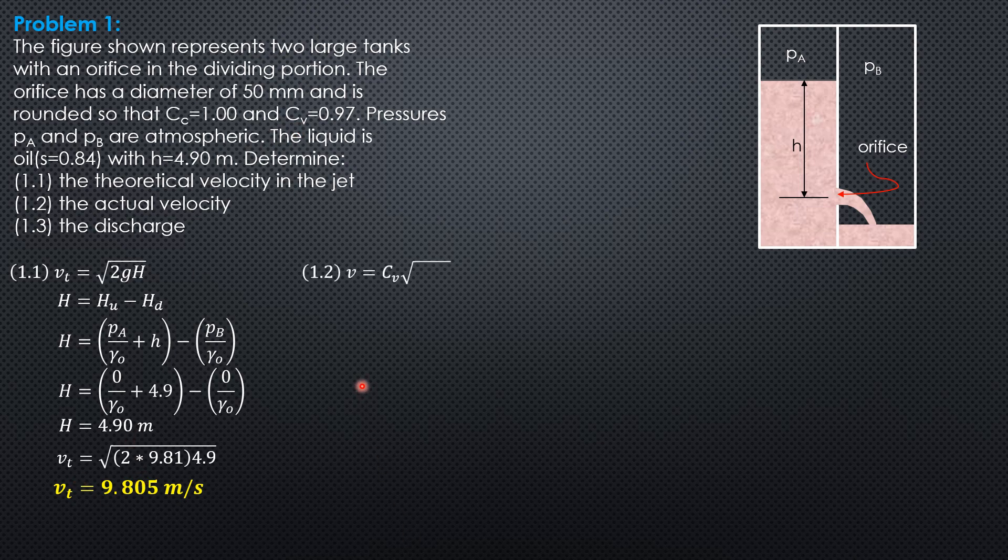The actual velocity is coefficient of velocity times theoretical velocity, or C sub V square root of 2GH. So substituting 0.97 square root of 2 times 9.81 times 4.9, the actual velocity is 9.511 meters per second.